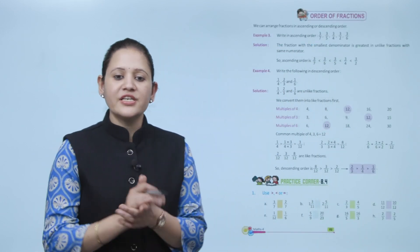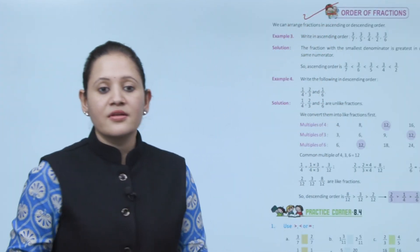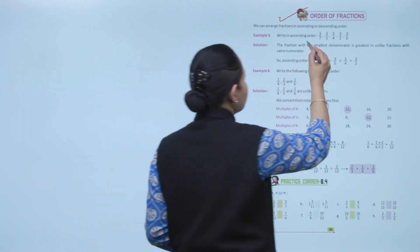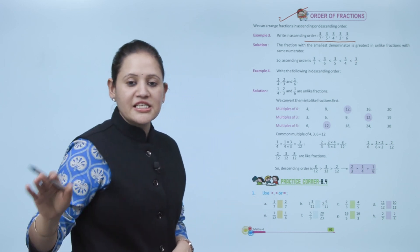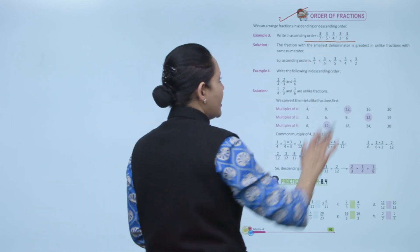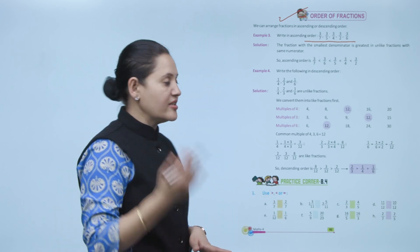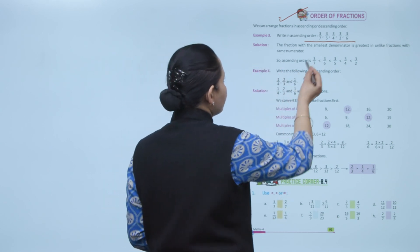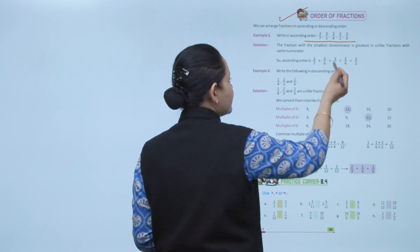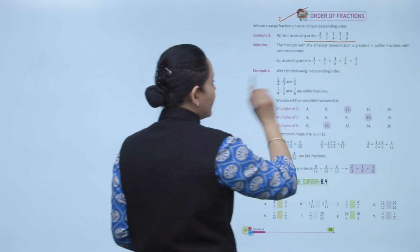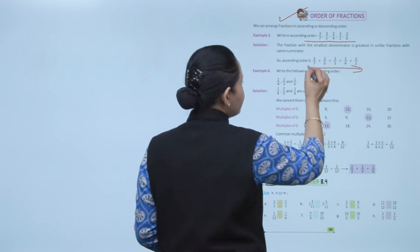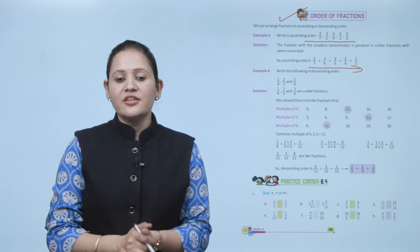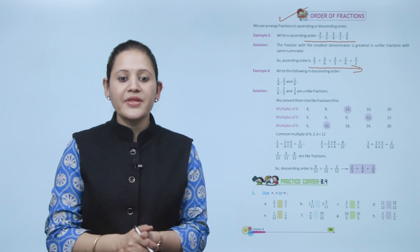Next is order of fractions. We can arrange fractions in ascending or descending order. For fractions with the same numerator and different denominators, the fraction with the larger denominator is smaller. So the ascending order of 3 by 7, 3 by 6, 3 by 5, 3 by 4, and 3 by 2 is: 3 by 7 is the least and 3 by 2 is the greatest.